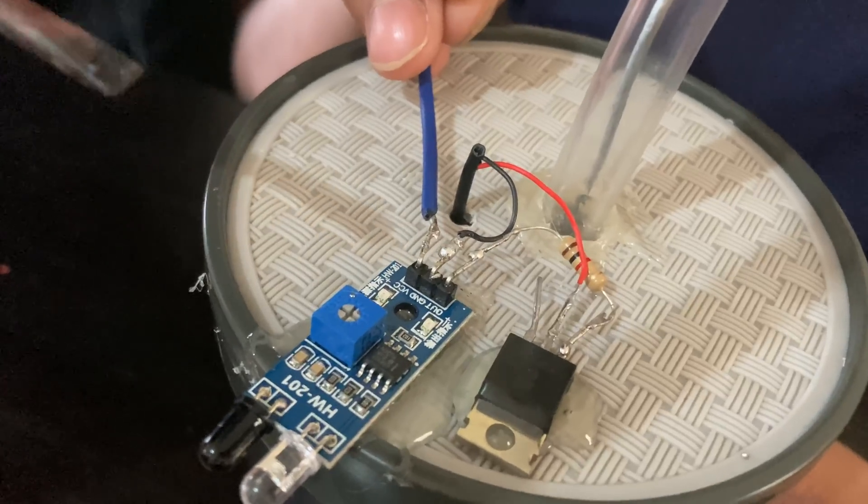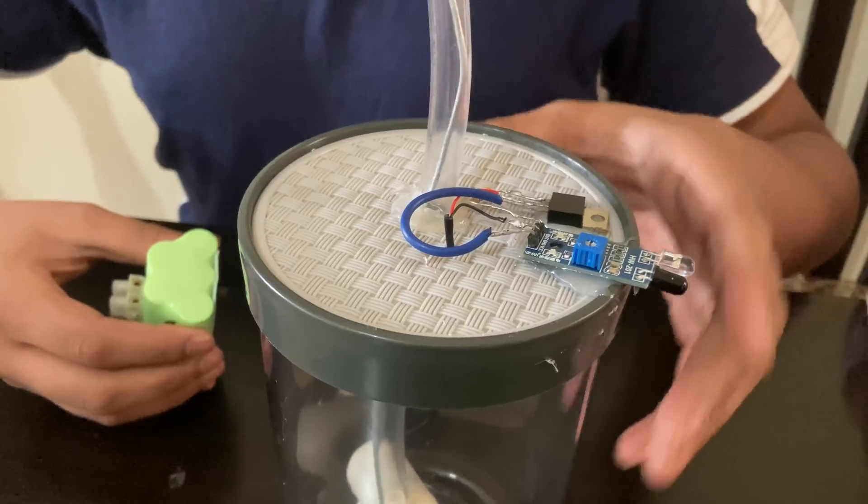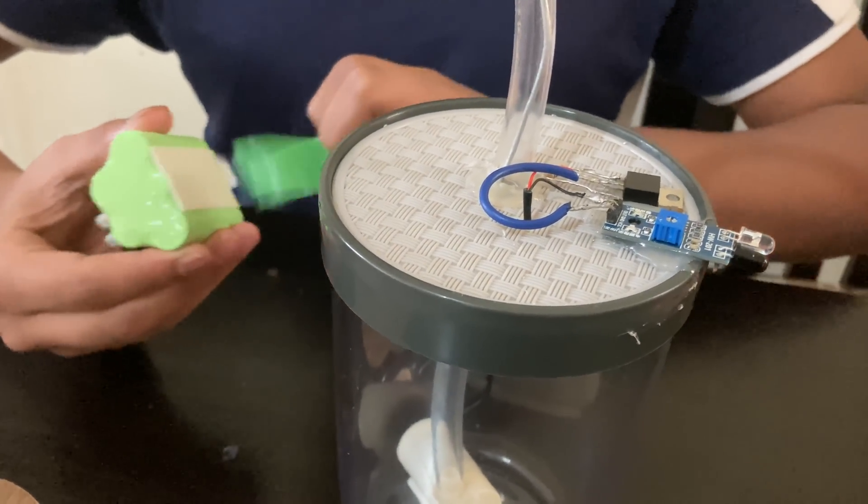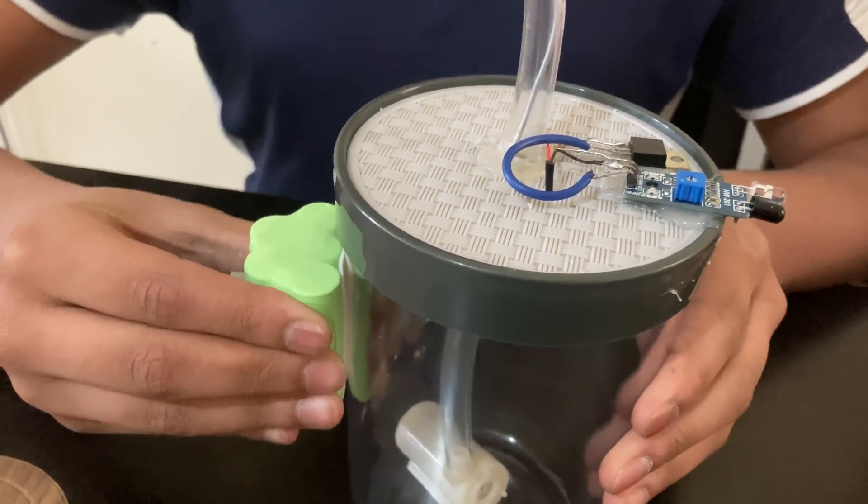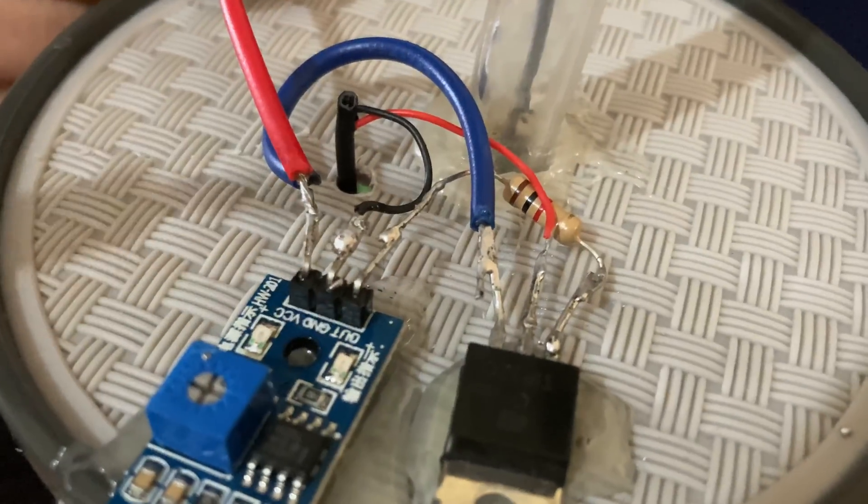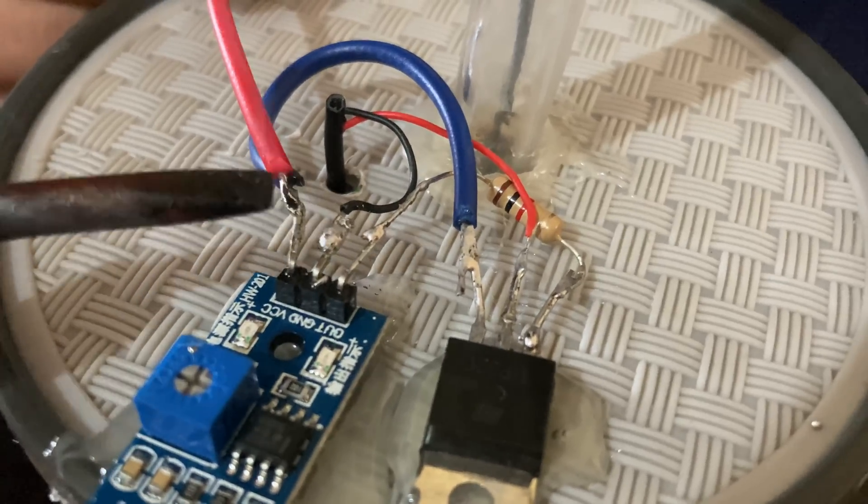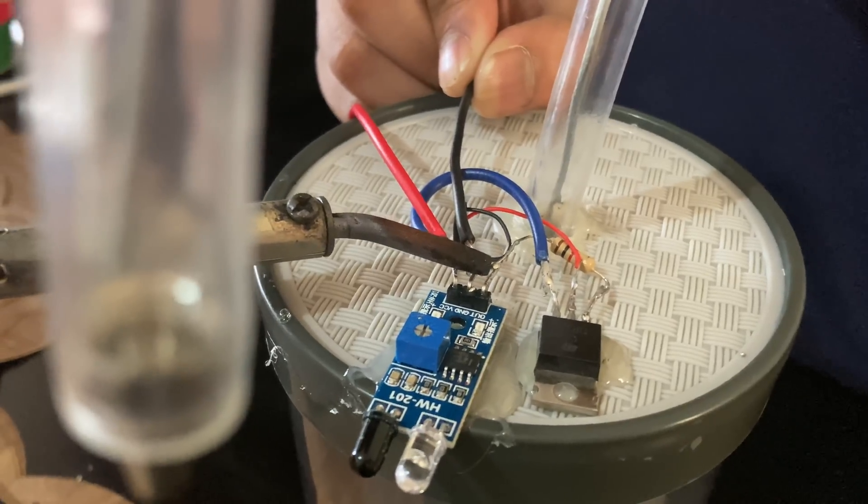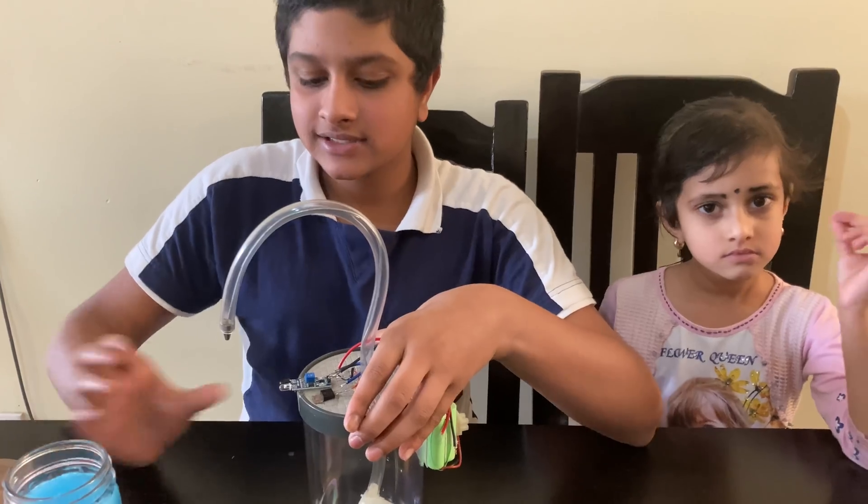So now that the circuit is done let me connect the battery. So I took a double sided tip and you stick it. So you take a black and red wire, connect the red to the VCC and the black wire to the ground. Now the connection is over, let's put some sanitizer and test.